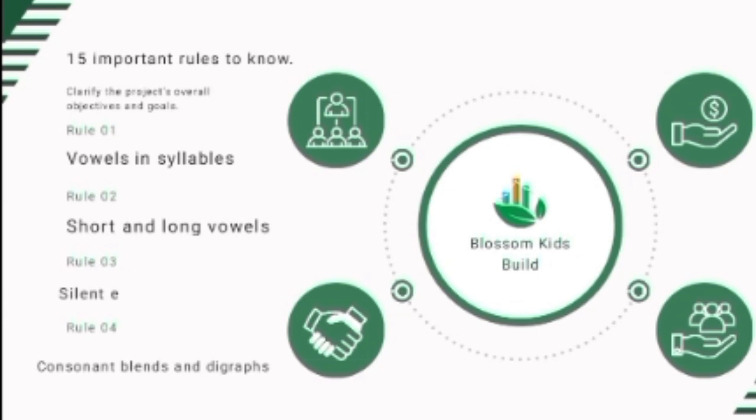Every syllable has a vowel sound — it can be a single vowel or a vowel combination. Consonants may precede or follow the vowel sound. For example, the word 'cats' has one syllable with the vowel sound A. The word 'happy' has two syllables with the vowel sounds A and E. The word 'elephant' has three syllables.